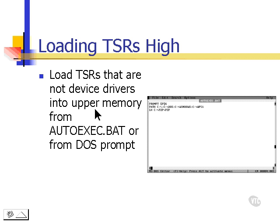The autoexec.bat file is used to load TSRs — terminate-and-stay-resident programs — into upper memory. Terminate-and-stay-resident programs are programs that start when the operating system is started, but we wouldn't know they were there until we actually need to use them, and then they operate for us. For example, SmartDrive, which is used for faster copying of files from one source to another.